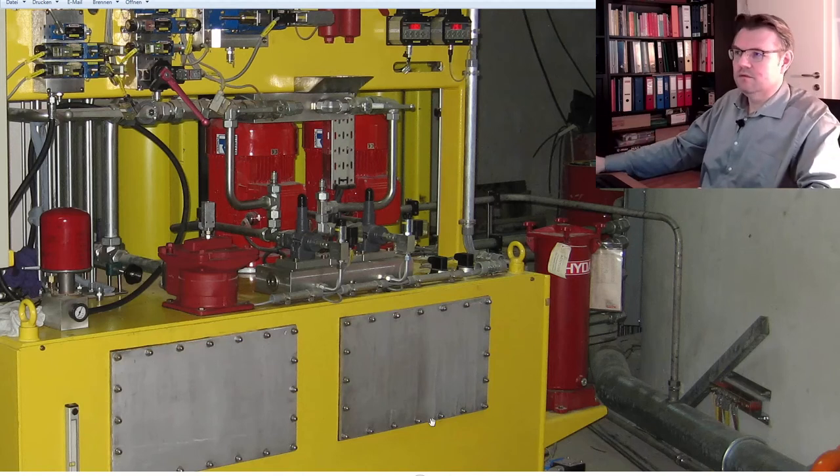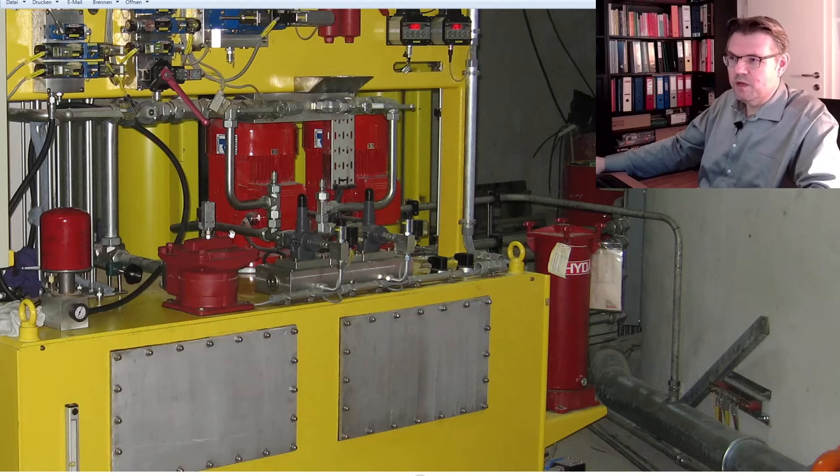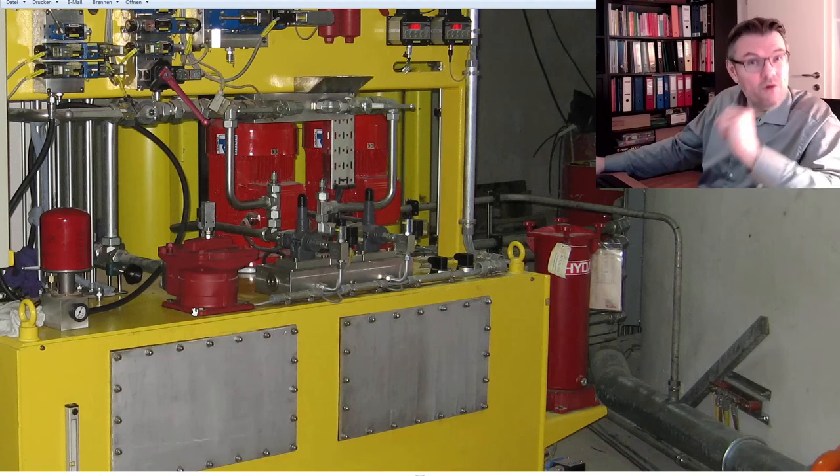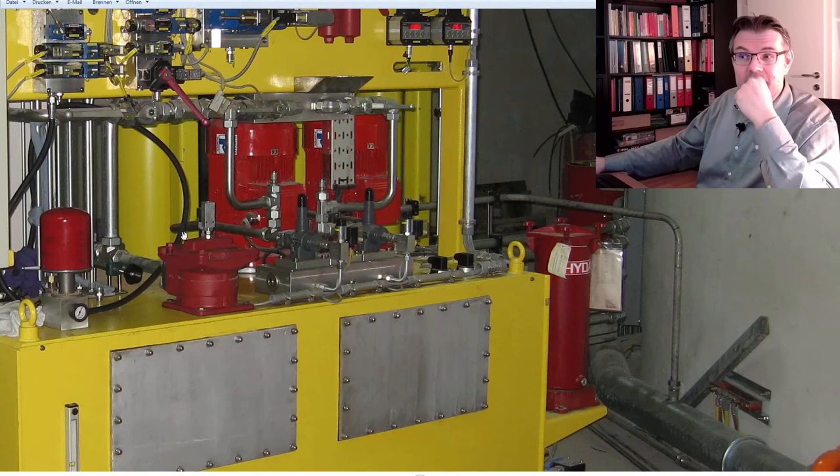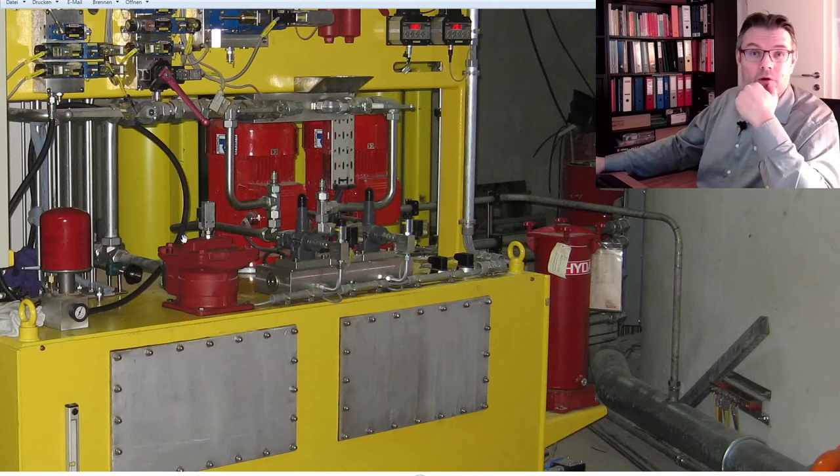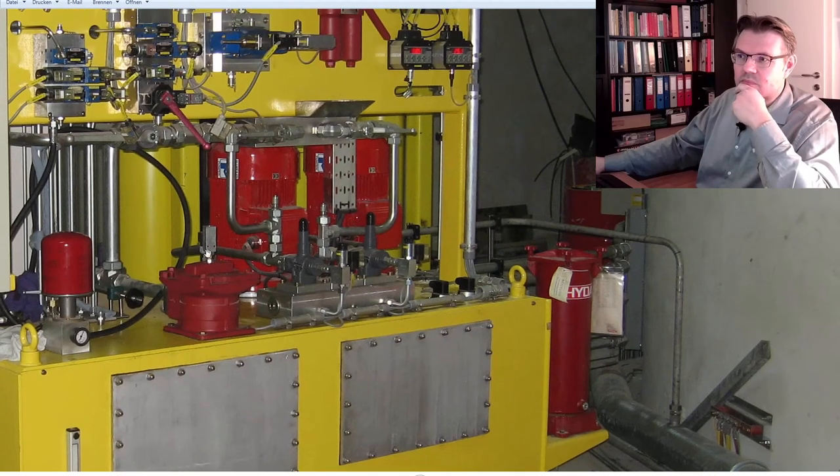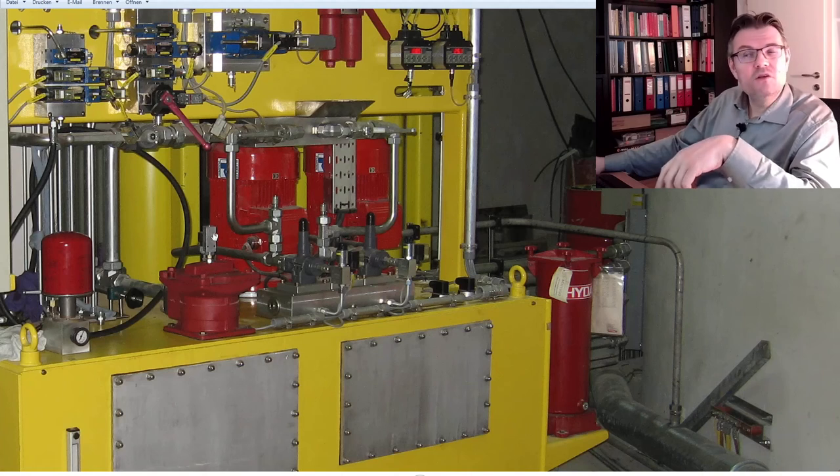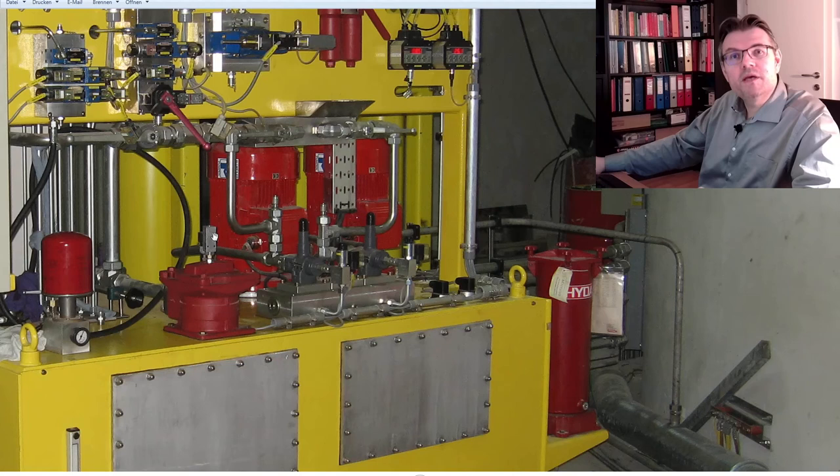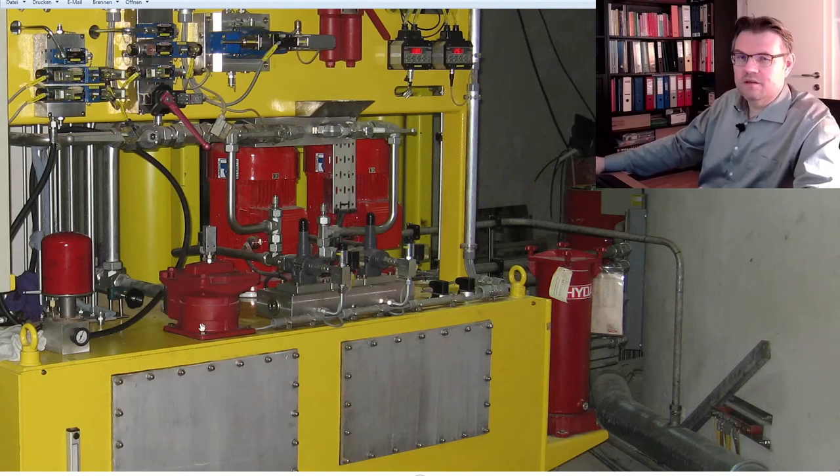It's this filter, this element. This here, this big one here, red part. This is the return line returning to the tank. This is a return line filter. Okay. So here we are using offline filter and an inline return line filter in this case. This thing here above, this is a pressure switch. So if the differential pressure is getting high, this will make a signal. Okay? This is the return line filter.